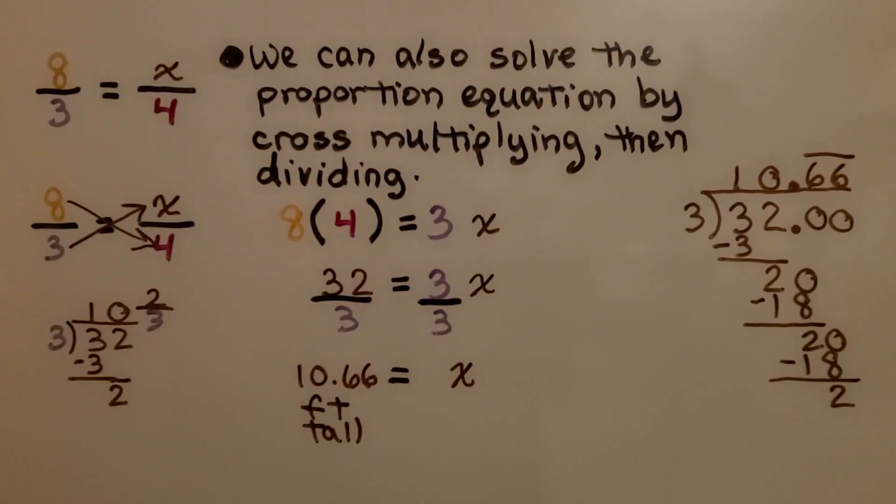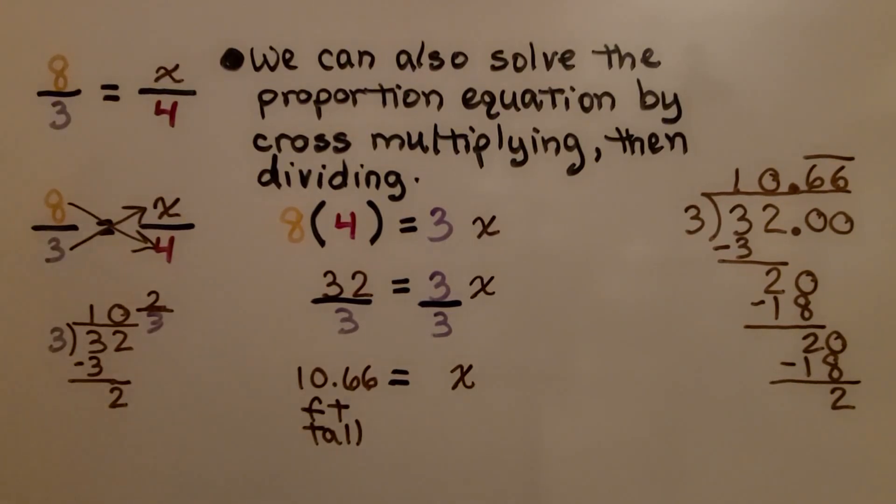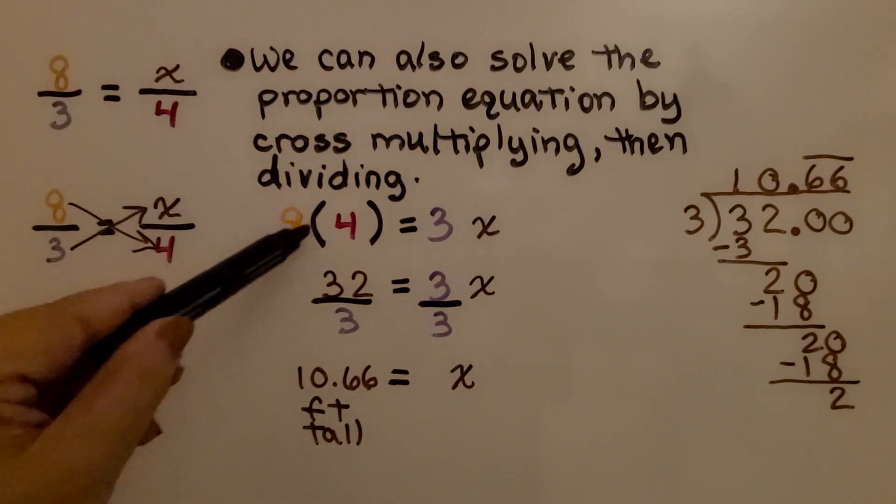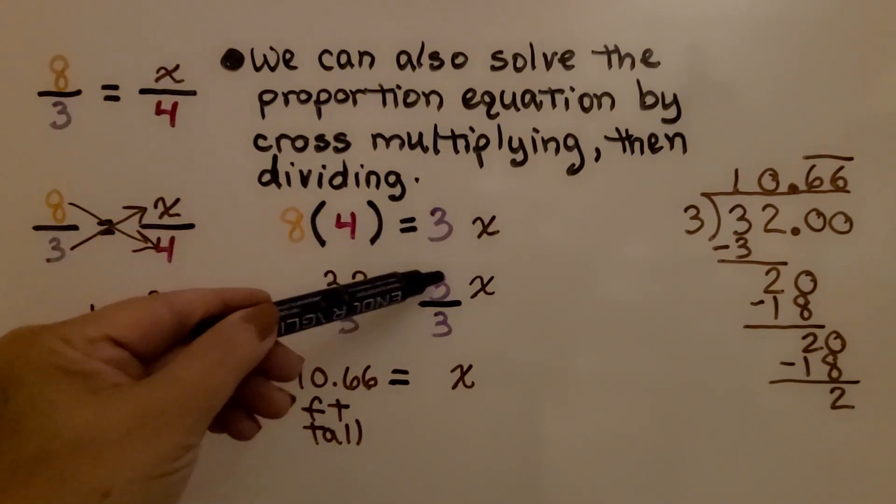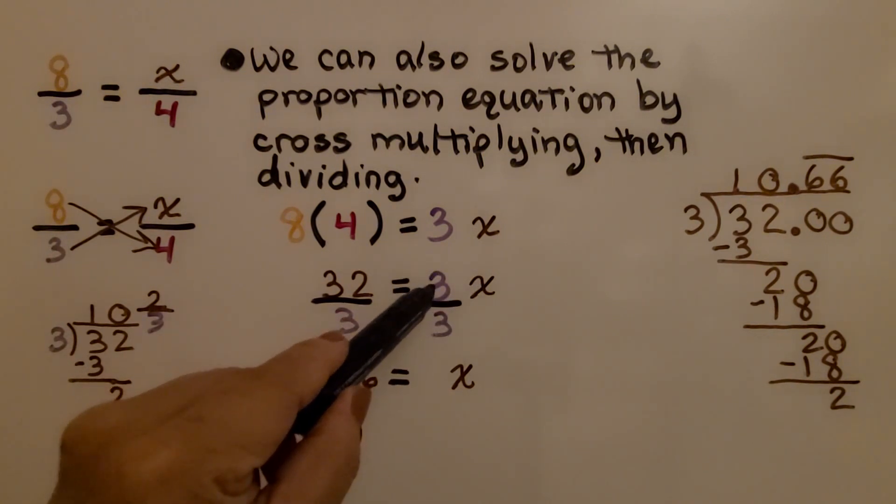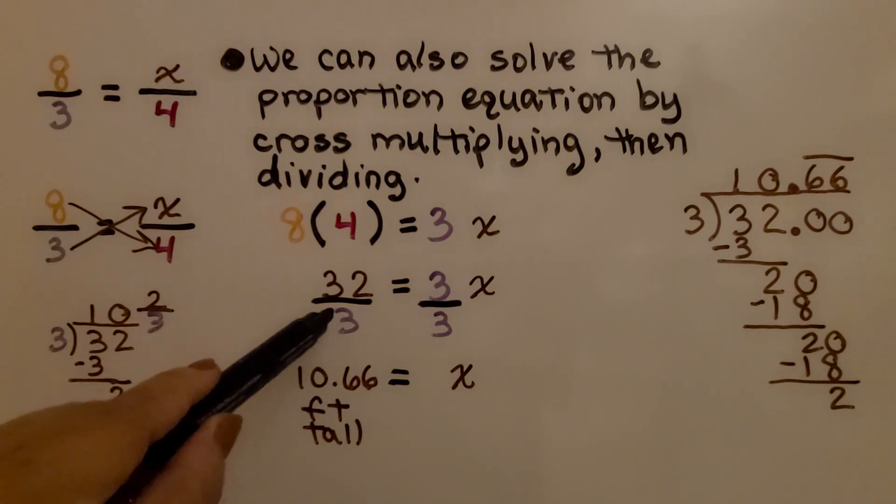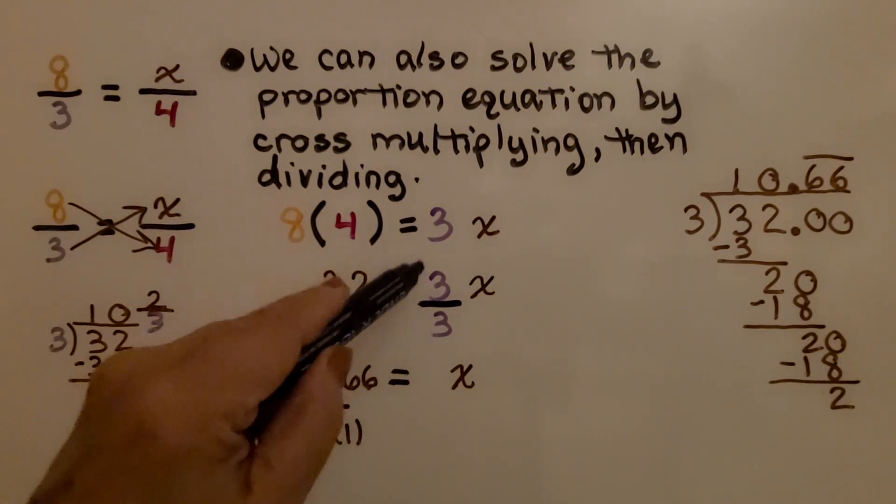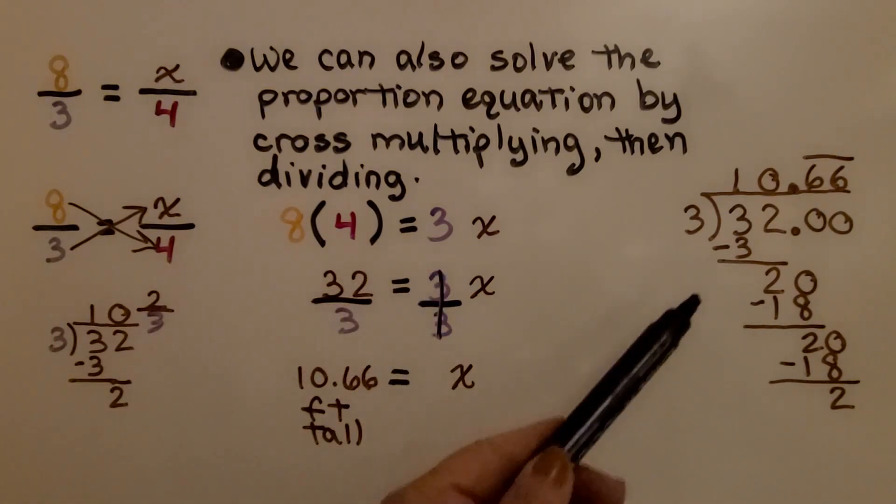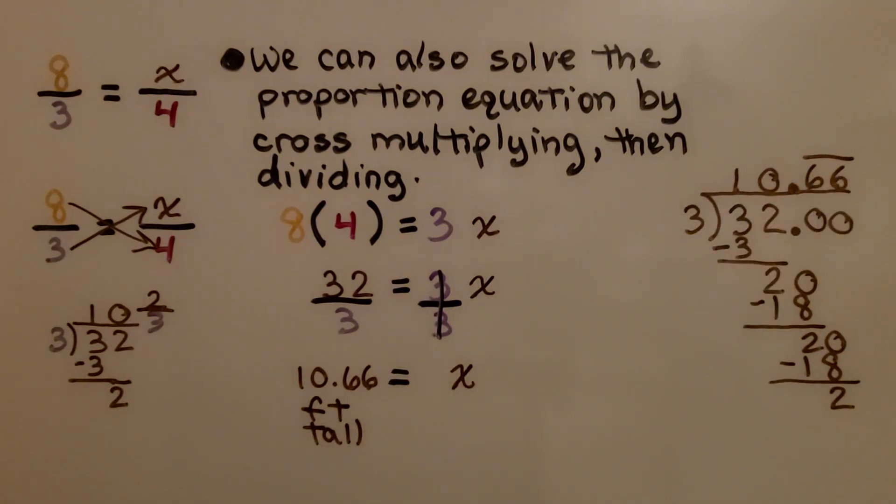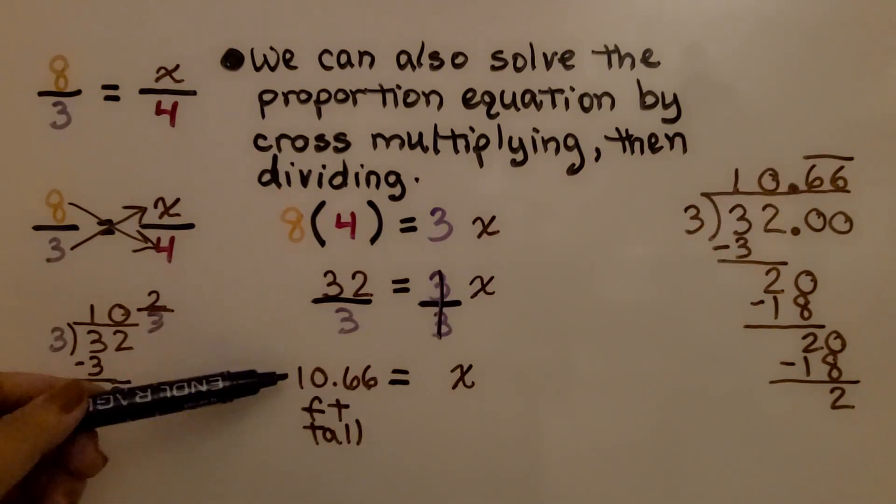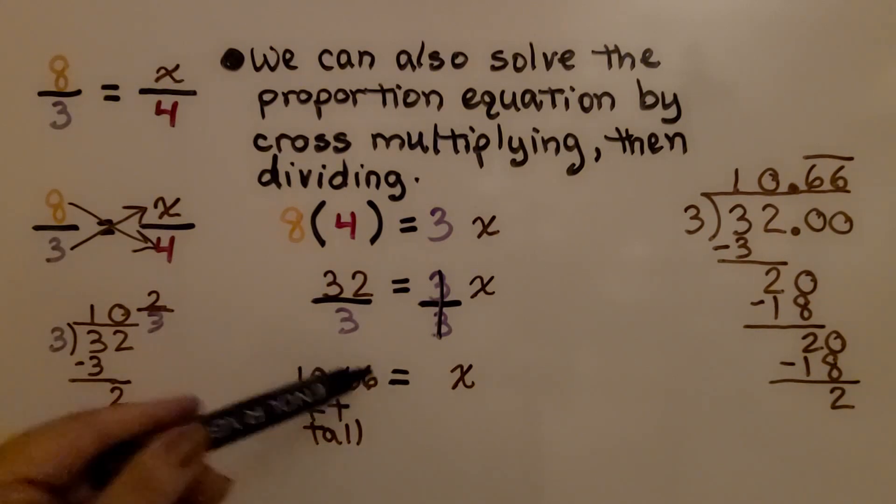We can also solve the proportion equation by cross-multiplying, then dividing. We have 8 thirds is equal to X over 4. We do cross-multiplying, so we could do 8 times 4 is equal to 3X. Well, 8 times 4 is 32, and we have 3X. Now, we divide both sides by this coefficient 3, so we get 32 thirds. On this side, we get the same numerator and denominator, so we get 1X. And we can do it as a decimal. 3 fits into 32, 10.66 times, and that 6 is going to repeat. So we can just write a 6 with a bar over the top. That's 10 and 2 thirds feet tall. 0.66 is 2 thirds in decimal form.